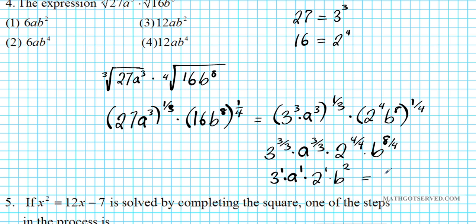We have 3 times 2, which is 6ab squared. So 6ab squared is our answer option number 1.